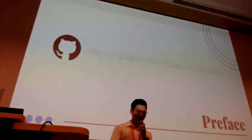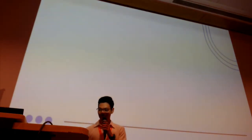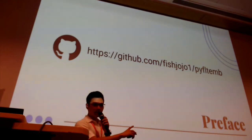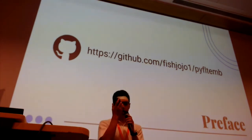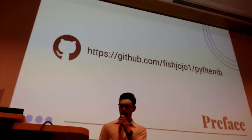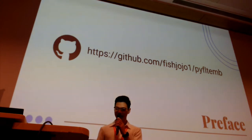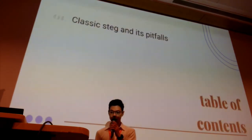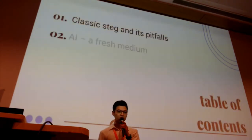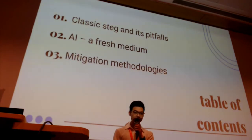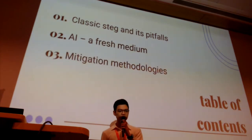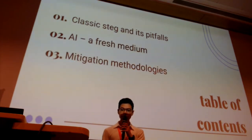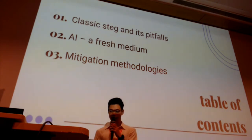Some preface: all the code here that I use, that's not like NumPy and the traditional libraries, will be available at my GitHub. A brief overview of what we're going through today: firstly, we'll be touching on classic steganography and its pitfalls. Next, the usage of AI as a fresh new medium, and some mitigation methodologies for the attack vector described.